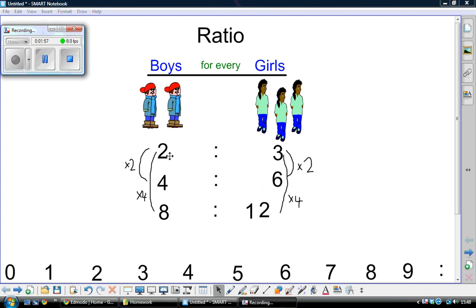All these ratios are equivalent because we've multiplied them by the same thing on each side. We've changed them proportionately. First we multiplied them by two. We doubled them both. Two boys for every three girls is the same as four boys for every six girls. We've doubled them both.